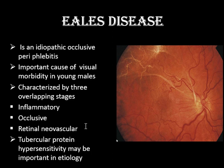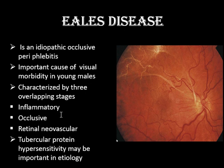Eales disease is characterized by three overlapping stages. The first is the inflammatory stage — you see periphlebitis, with sheathing along the veins. The second is the occlusive stage, progressing from inflammation to occlusion. The third is the neovascular stage. Retinal vascular occlusion leads to ischemia, and ischemia leads to increased production of VEGF, leading to retinal neovascularization.